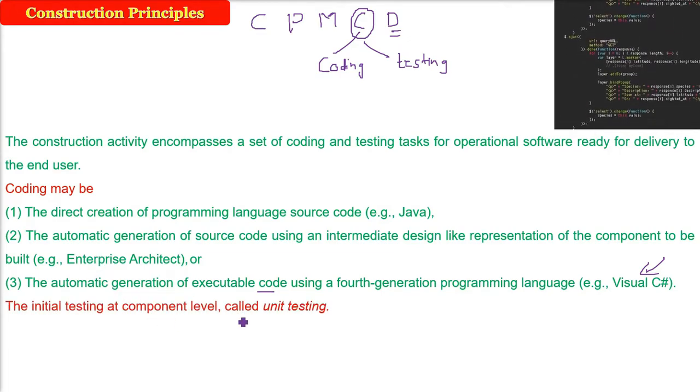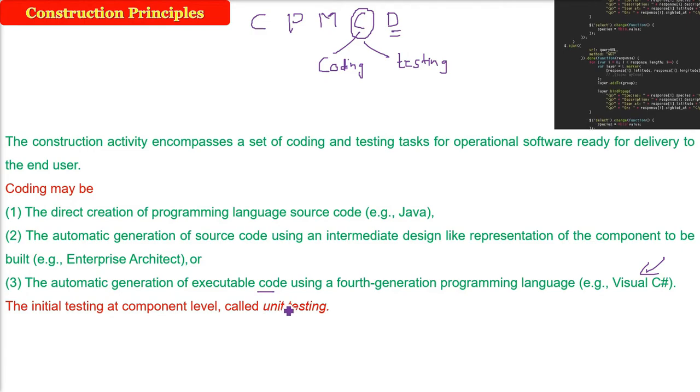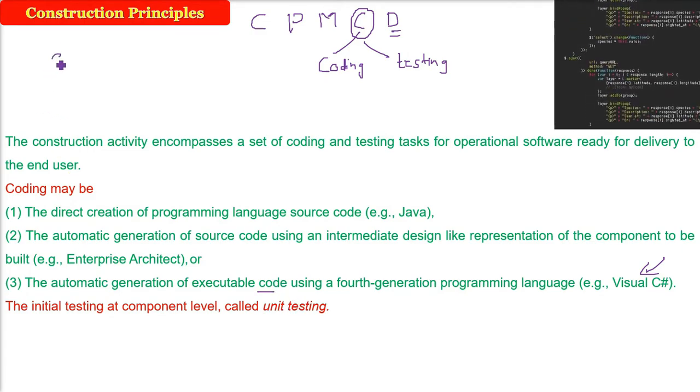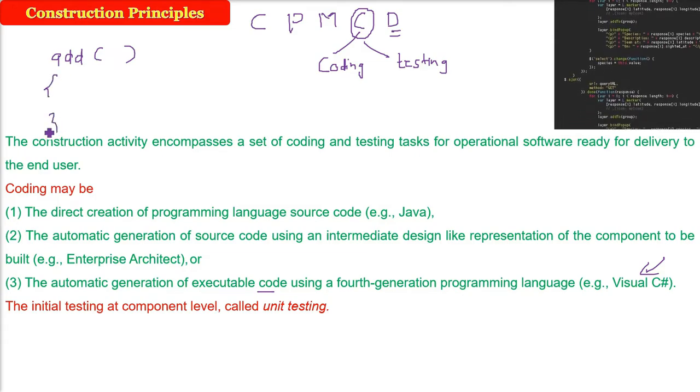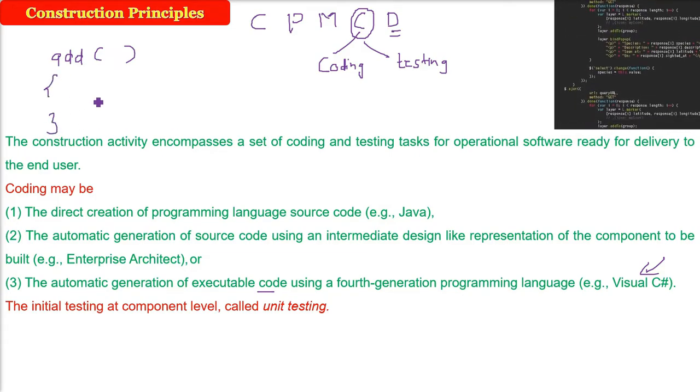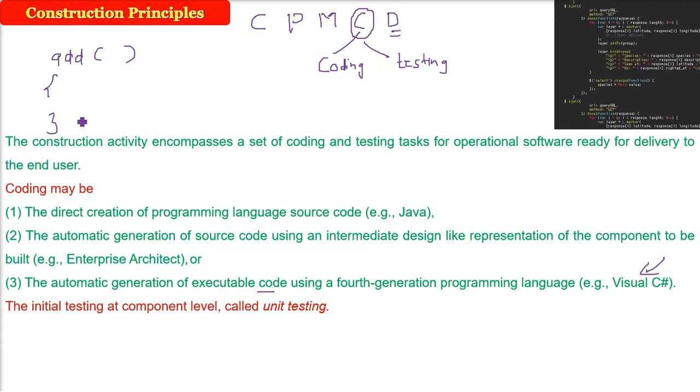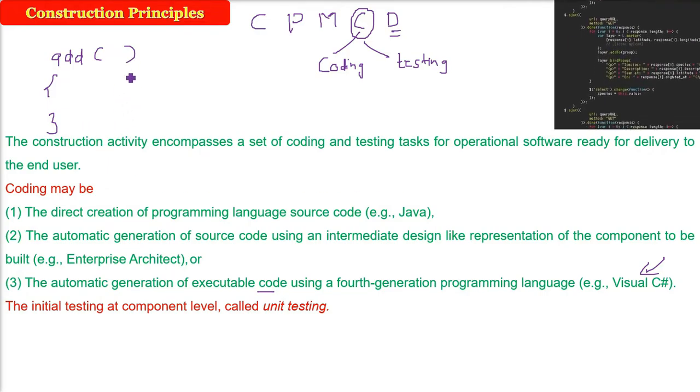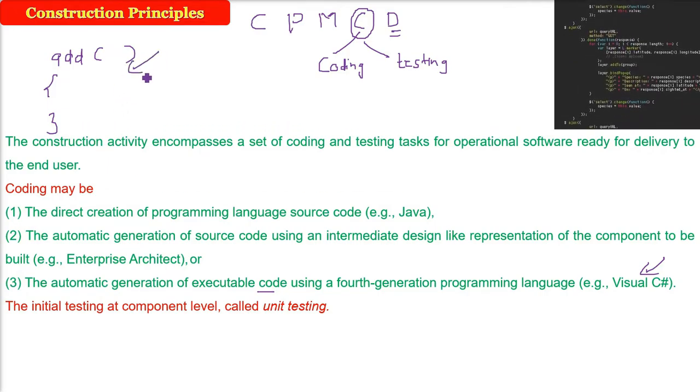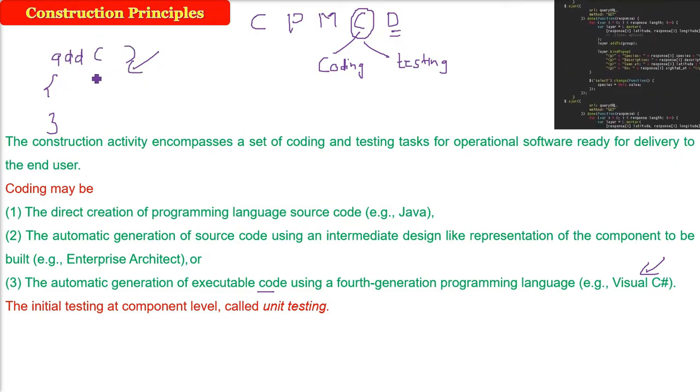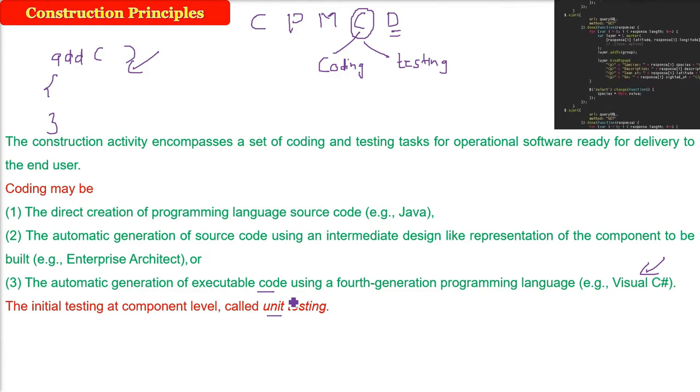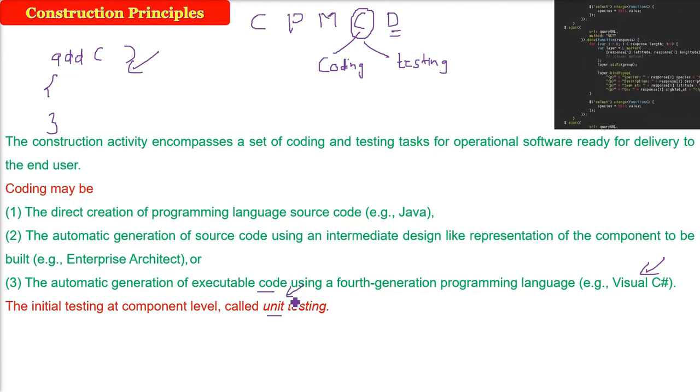The initial testing at component level is called unit testing. For example, you've written a function called add, you've defined certain variables, added and printed or returned. When we test this function or a group of functions called a module, that is unit testing, the basic level.